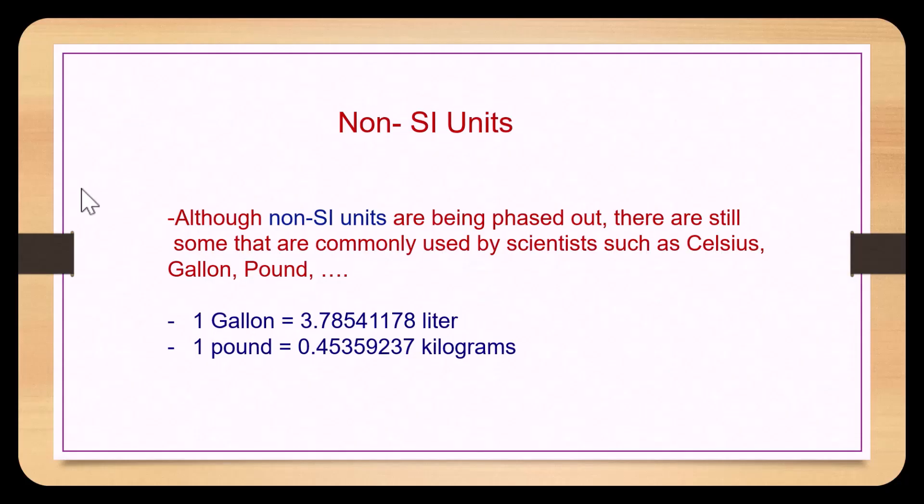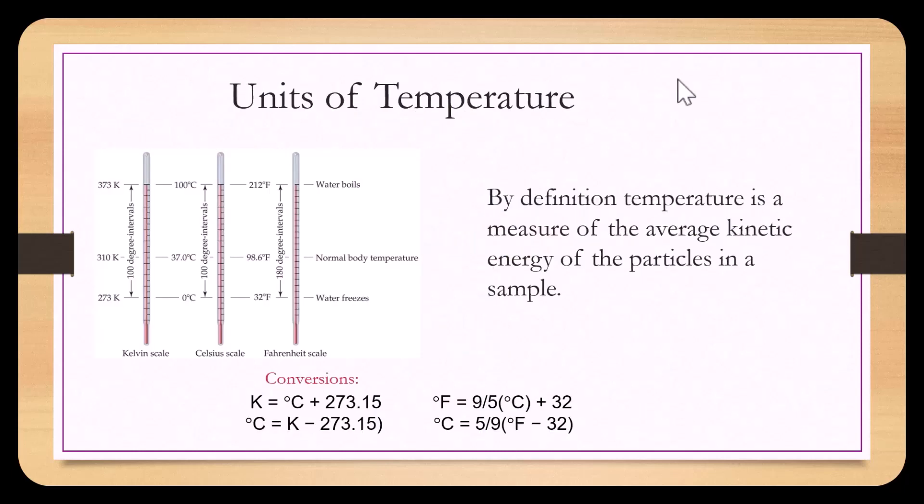Although non-SI units are being phased out, there are still some commonly used by scientists, such as Celsius, gallon, and pound. By definition, temperature is a measure of the average kinetic energy of the particles in a sample. This is similar to rubbing the palm of your hand on a carpet — the palm gets warmer. In chemistry, when two particles collide they produce friction, making it hotter. The average of all these particles rubbing together collectively gives you a temperature.